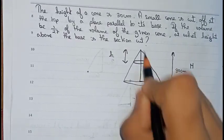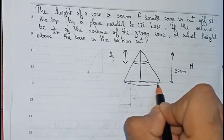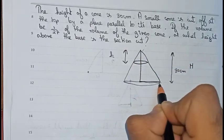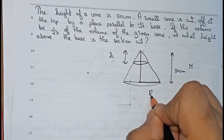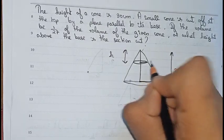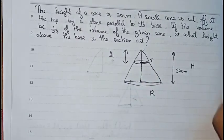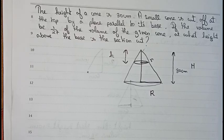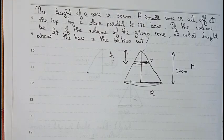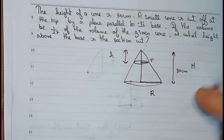The big cone has a radius, which we will take as capital R. The small cone also has a radius, which we will take as small r. Now we need to use the theorem of similarity to solve this question.